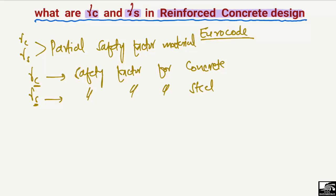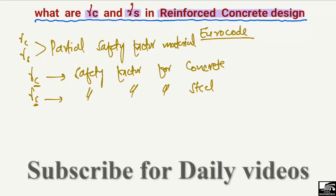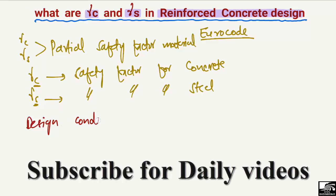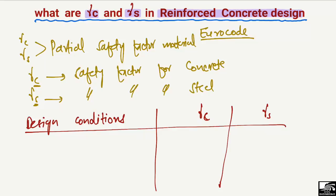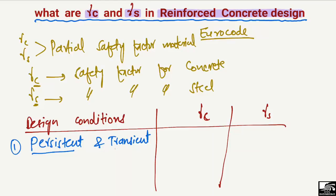We have two different design conditions, and accordingly two different values for each of these materials. The two design conditions are: first, the persistent and transient design condition, which means the normal or temporary conditions.